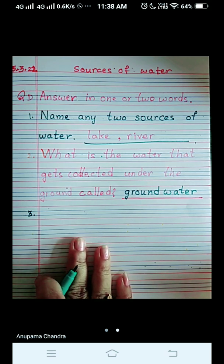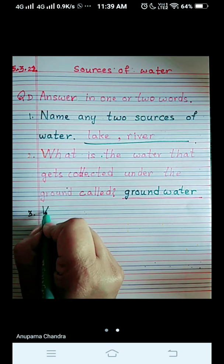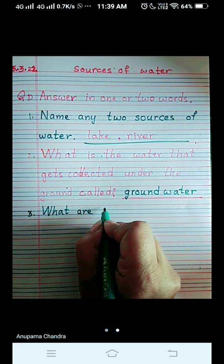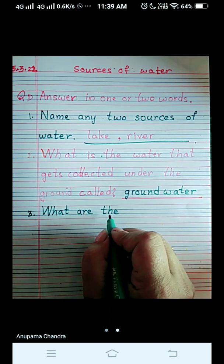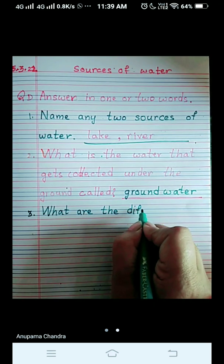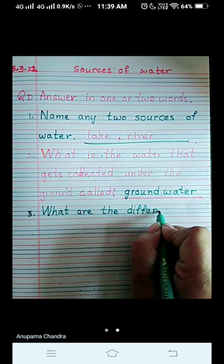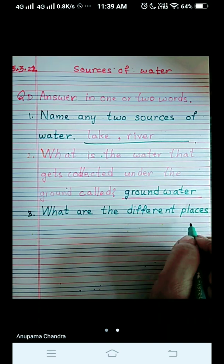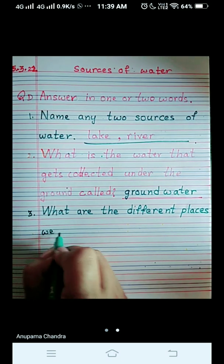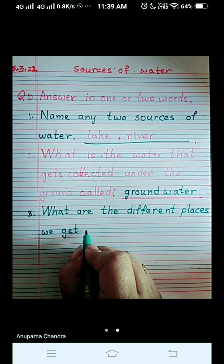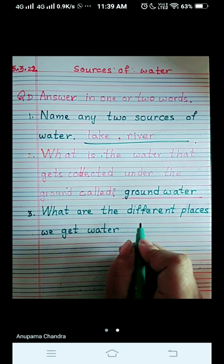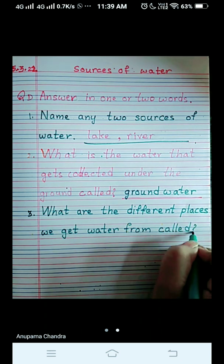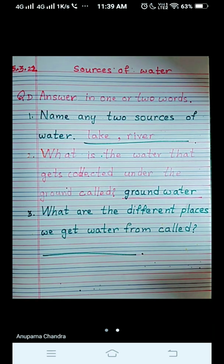Now we come to number three, and the third one is what are the, write along with me children. What, W-H-A-T what, A-R-E are, the, T-H-E the, different, D-I-F-F-E-R-E-N-T different, places, P-L-A-C-E-S places, we, W-E we, get, G-E-T get, water, W-A-T-E-R water, from, F-R-O-M from, called, C-A-L-L-E-D, question mark, and the dash for writing the answer.